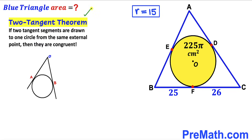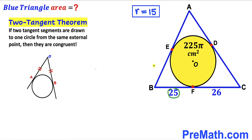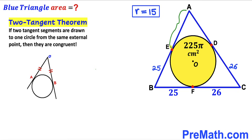Now let's recall the Two-Tangent Theorem: if two tangent segments are drawn to a circle from the same external point, they are congruent. Applying this to our problem: segment EB = segment BF = 25 cm, and segment CD = segment CF = 26 cm. We assume segment AE = x, so segment AD = x as well.